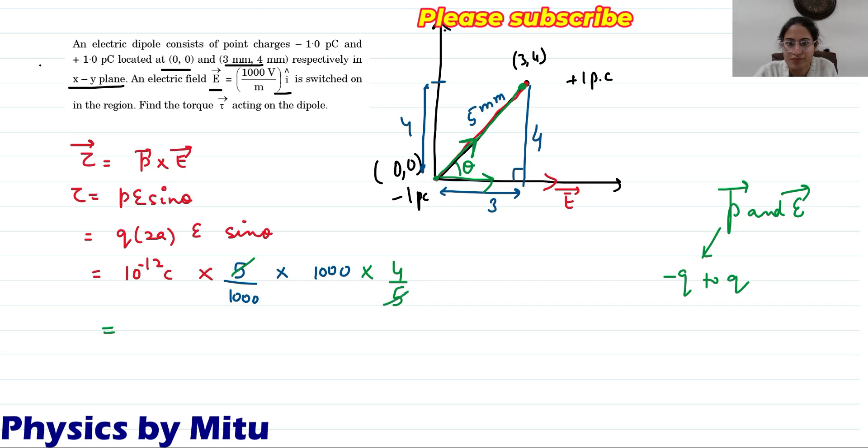Solve this. You will get 4 into 10 raised to power minus 12. What is the unit? Unit of the torque - you can see here - coulomb meter, Newton per coulomb, which gives Newton meter. I will write torque as F into distance. Here you can see Newton meter.